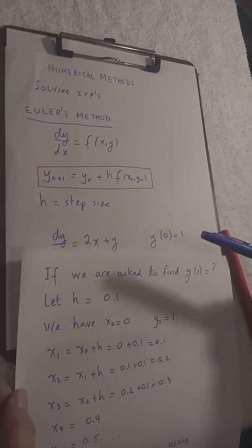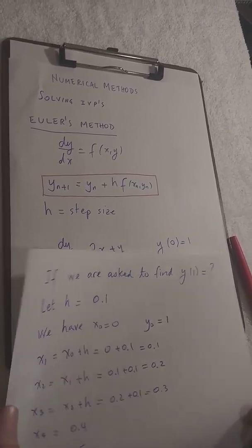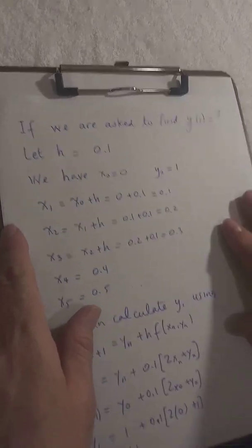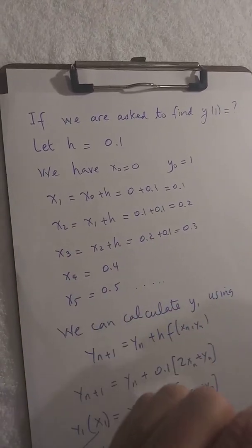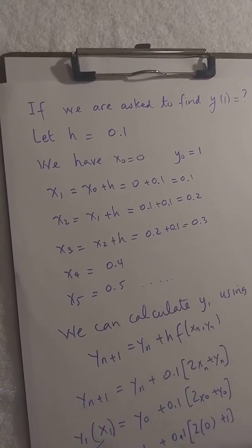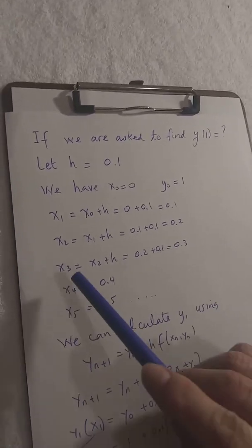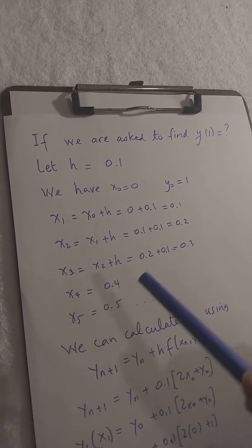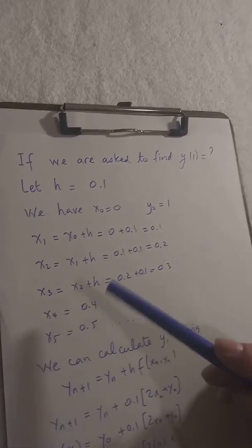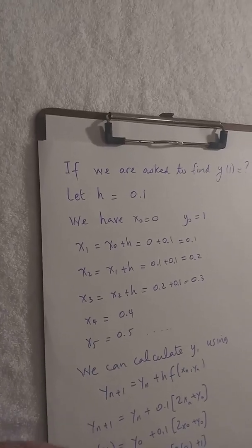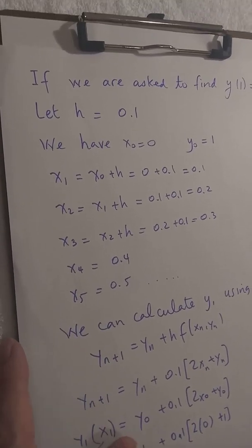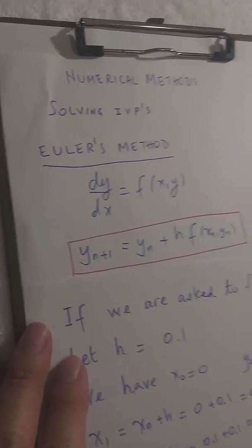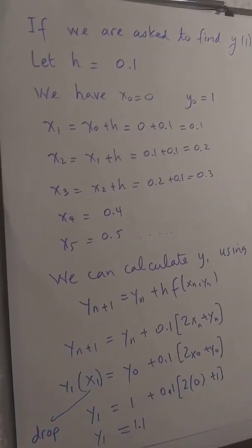So our x0 was 0 and y0 was 1 — that was given. x1 is x0 plus h, which is 0 plus 0.1, which is 0.1. x2 is x1 plus h, so 0.2. x3 is 0.3. Likewise x4 is 0.4, x5 is 0.5, etc. Our last value is x10, which is 1, and we want to know the value of y at 1. Here's the formula for Euler's method: yn+1 equals yn plus h·f of xn, yn.